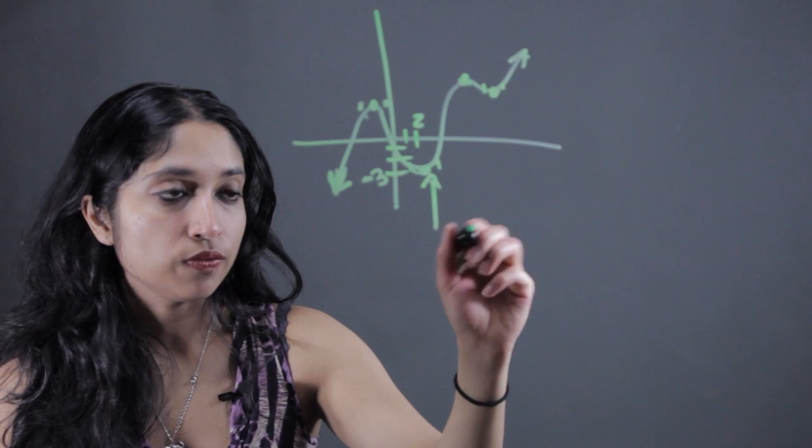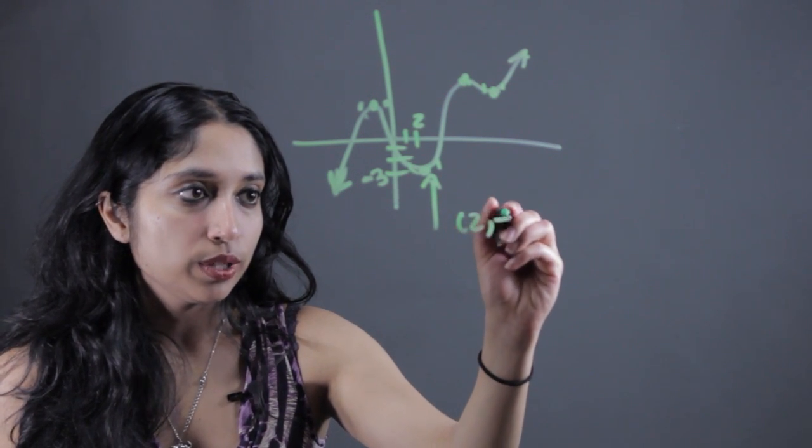And this local minima right here, this valley, could be written as 2, negative 3.